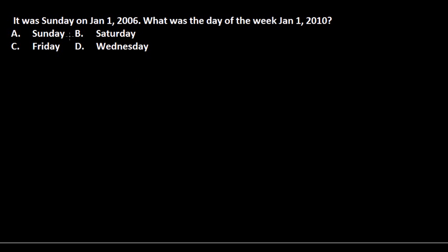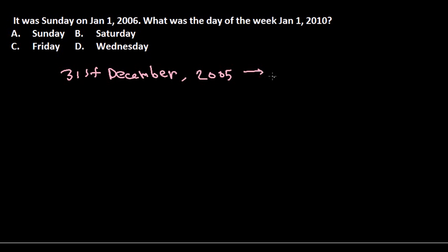This problem is related to December and January, which is a one-day gap but the year changes. It was Sunday on January 1, 2006, so on December 31, 2005 — just one day before — both the date and year change because it's between December 31st and January 1st, a very special transition. So on December 31, 2005, it was Saturday.